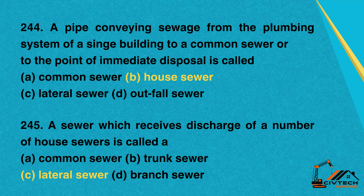Question 244: A pipe conveying sewage from the plumbing system of a single building to a common sewer or to the point of immediate disposal is called. A. Common sewer. B. House sewer. C. Lateral sewer. D. Outfall sewer.